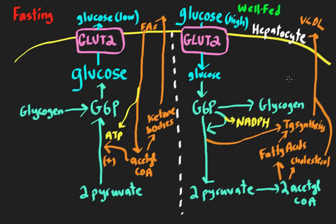On the right side, this is what's happening in the liver when you've eaten a meal and you're well-fed and glucose is high. In both cases, you can see that glucose simply follows its concentration gradient. So when there's a transporter present, glucose will just simply go from a high concentration to a low concentration — that's called facilitated diffusion.